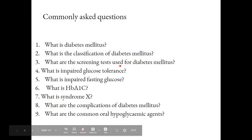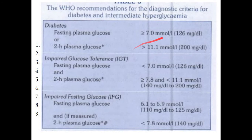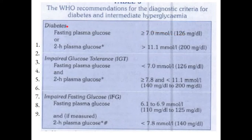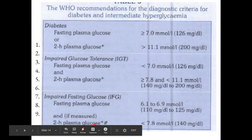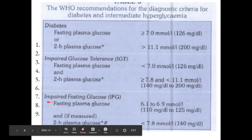What are the screening tests for diabetes mellitus? Urine for sugar and blood sugar tests. What is impaired glucose tolerance (IGT) and impaired fasting glucose (IFG)? Fasting plasma glucose more than 126 mg/dl = diabetes; 2-hour plasma glucose more than 200 mg/dl = diabetes. IGT: fasting plasma glucose less than 126 and 2-hour glucose between 140–200 mg/dl. IFG: 2-hour glucose less than 140 mg/dl but fasting blood sugar between 110–125 mg/dl.